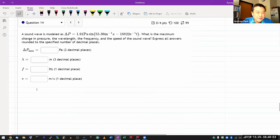All right, it says the sound wave is modeled as this thing. What is the maximum change in pressure, the wavelength, frequency, and the speed of the wave?